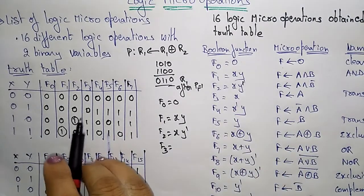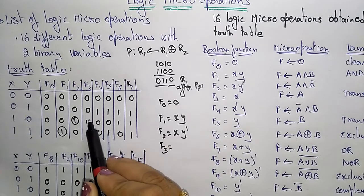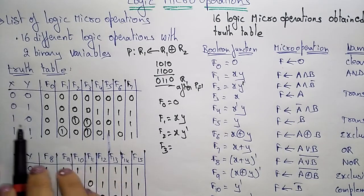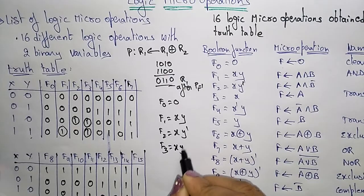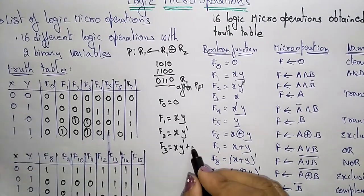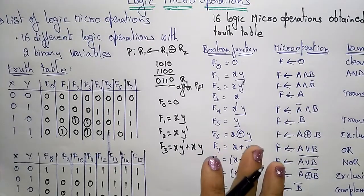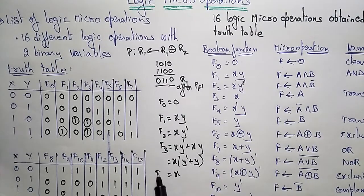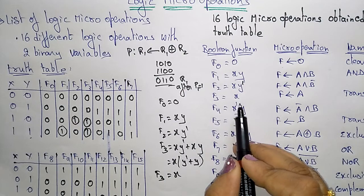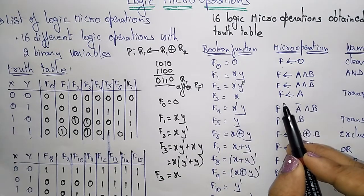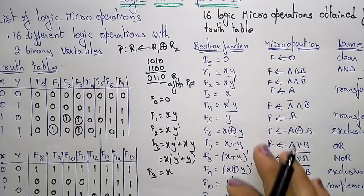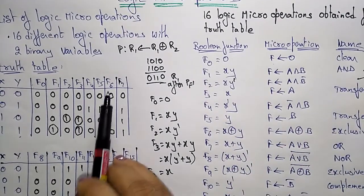For F3, the value 1 appears in two bit positions. We get F3 = XY' + XY. Taking X as common: X(Y' + Y) = X times 1 = X. So F3 = X, meaning the value of A is simply transferred to F. This is called the Transfer A operation.